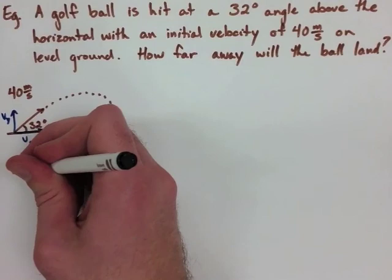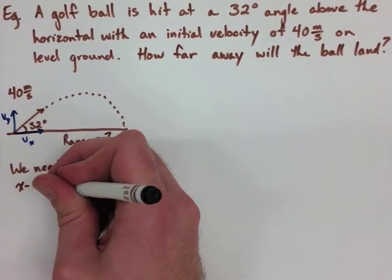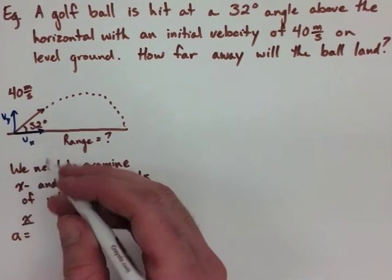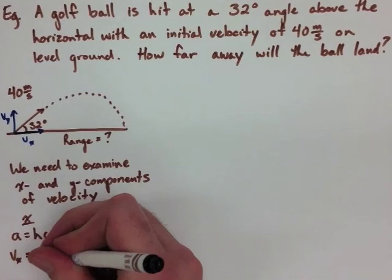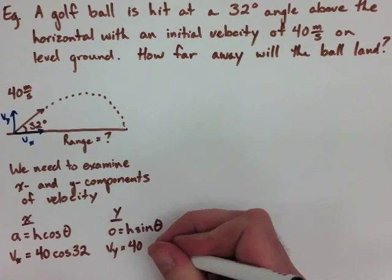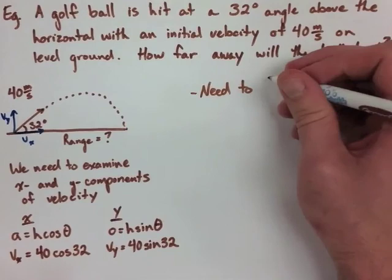In order to find the distance that the ball has traveled, we need to examine both the x components and the y components of this motion. We have an initial velocity in the x direction and in the y direction. To find the x direction, we have the cosine because we have the adjacent side. So the x velocity is 40 cos 32, and the y velocity would be 40 sin 32 degrees.